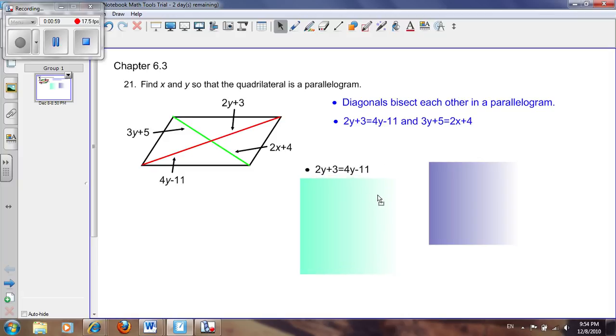The equation reads 2y plus 3 equals 4y minus 11. The first thing we need to do is put the integers on one side and the variables on another. To do that, we subtract 2y from both sides and get 3 equals 2y minus 11.